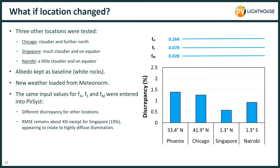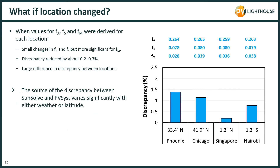Having aligned the two programs as best we can for Phoenix, we now change the location, testing Chicago, Singapore and Nairobi. We maintain the same albedo but change the weather file, latitude and longitude. When we kept the same input values for FA, FS and FM across all locations, we found significant differences in the discrepancy between programs. If instead we determine those three parameters separately at each location, the albedo and structural shading factors remain about the same, but the mismatch factor changes — increasing slightly in cloudier climates. We can reduce the discrepancy by 0.2 to 0.3% by setting those location-specific values, but the discrepancy remains quite different between locations, suggesting that whatever causes it varies with either the weather or the latitude.